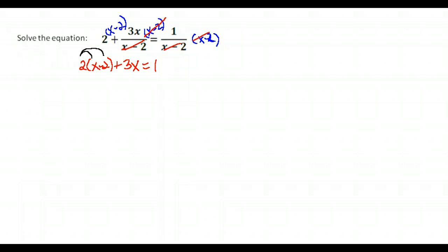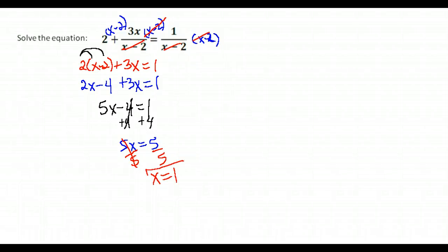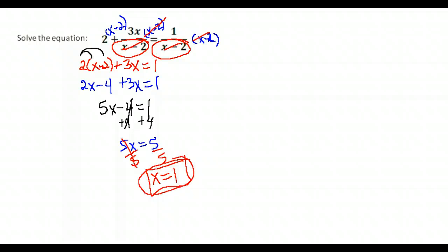Distribute to eliminate the parentheses: on the left we have 2X minus 4 plus 3X equals 1. Combine like terms to get 5X minus 4 equals 1. Add 4 to both sides, then divide both sides by 5. We get X equals 1. Checking back: 1 minus 2 equals negative 1, which is fine as a denominator — we just can't have zero. Our solution is X equals 1.